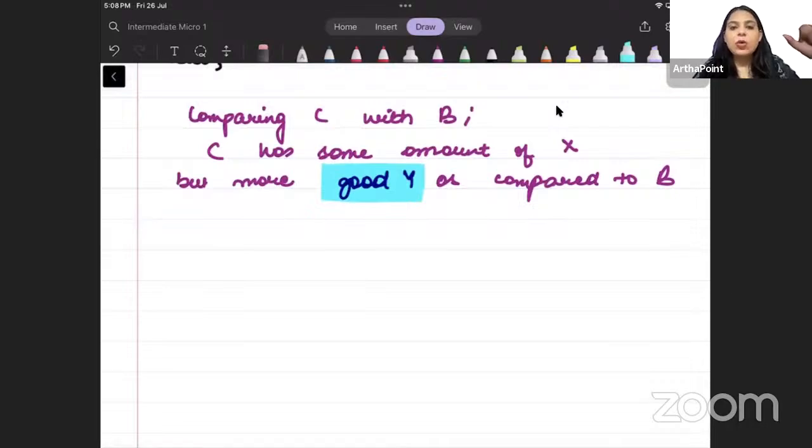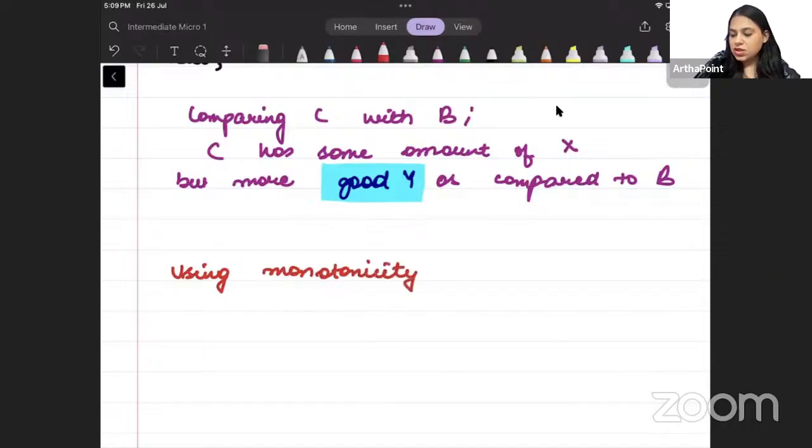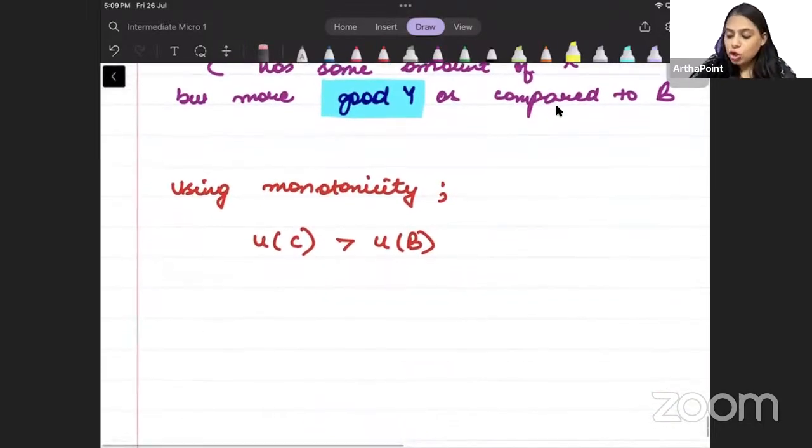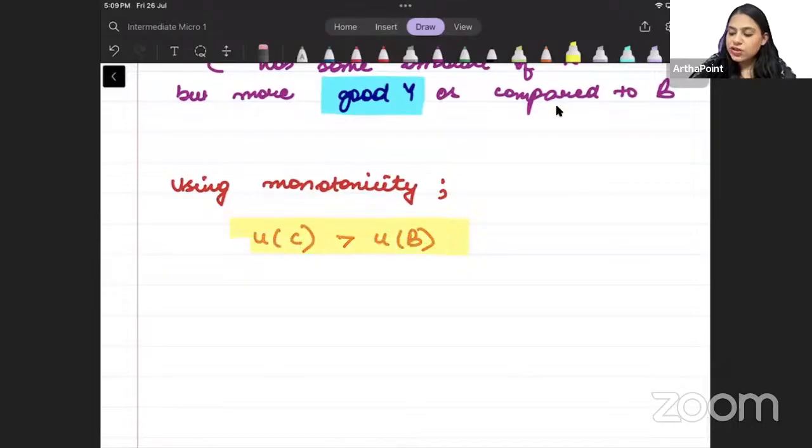In the last class, we studied about monotonicity. So using monotonicity, which says more is preferred, utility from C should be more than utility from B. Transitivity tells us that B and C should give the same utility, but monotonicity is telling me that C should give me more utility than B.